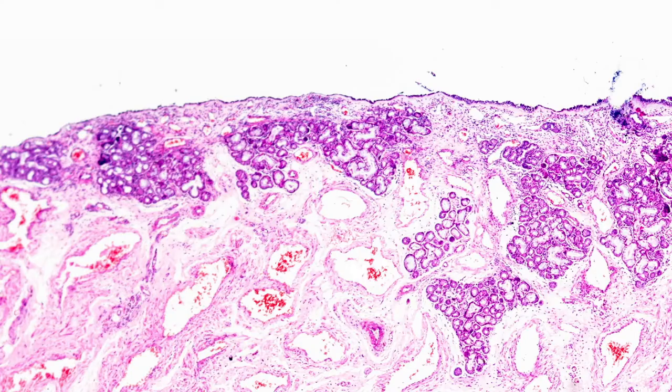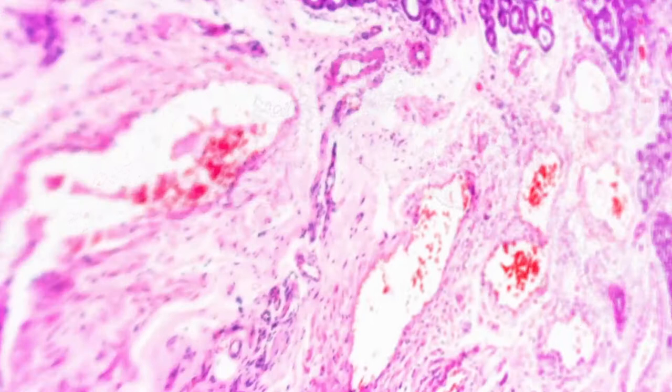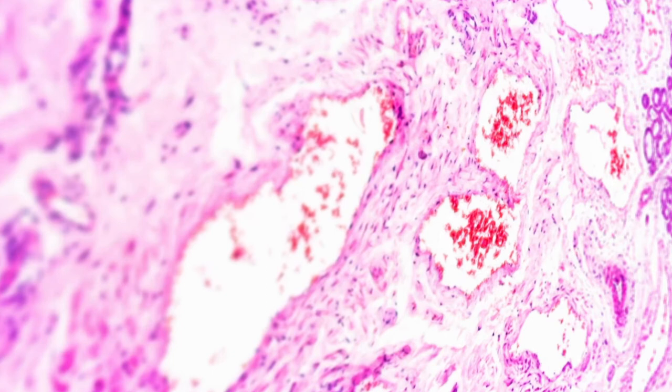When someone becomes infected, their body reacts with an immune response within a few minutes. But if this innate immune system is defective, this may lead to a cytokine storm, an overproduction of pro-inflammatory cytokines that, in the end, could lead to sepsis.